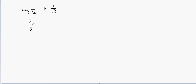Why is it called an improper fraction? Because the numerator is greater than the denominator. Usually we see proper fractions in which the numerator is smaller than the denominator. But here the numerator is greater than the denominator. We always get an improper fraction when we try to convert a mixed fraction into a fraction.